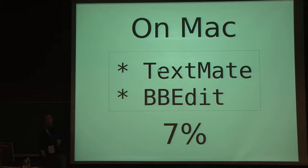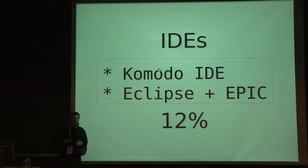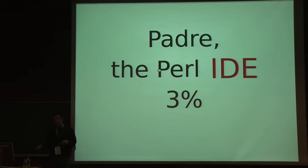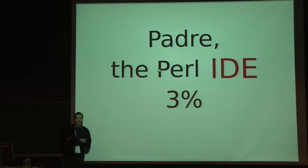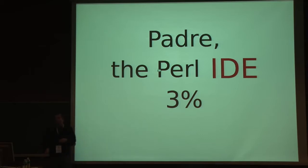There were two IDEs that got votes: Komodo IDE, which you might know, developed by ActiveState — it's a commercial IDE that costs something like $300. And Eclipse, which is open source and mainly for Java, but has a plugin called EPIC for Perl development. They got about 12% of the answers, which means that a really low percentage of Perl users are actually using something like an IDE — and that's something we'd like to change with Padre. About 3% of people answered Padre, which is a bit skewed because probably all Padre users answered. But I was happy because we got more than 100 answers — actually 101 — so there is some Padre user base already.